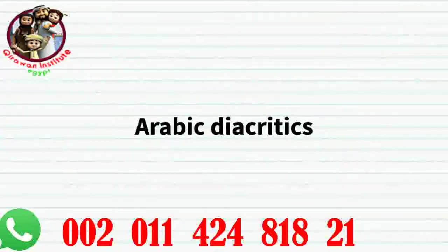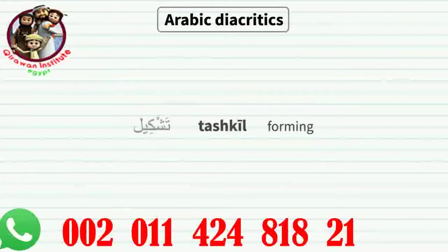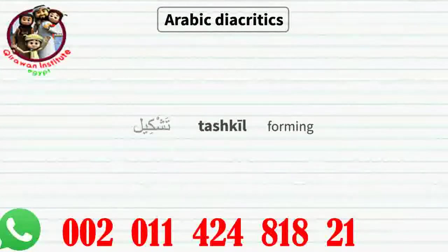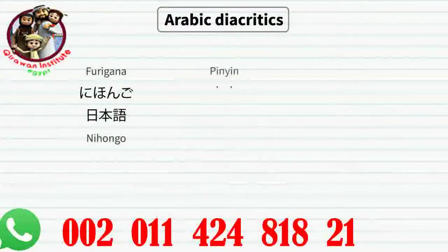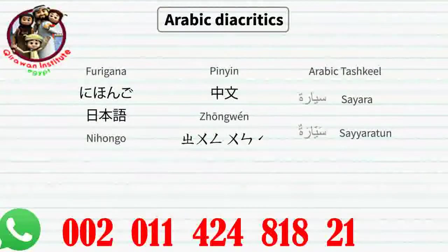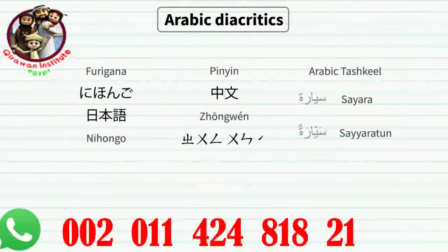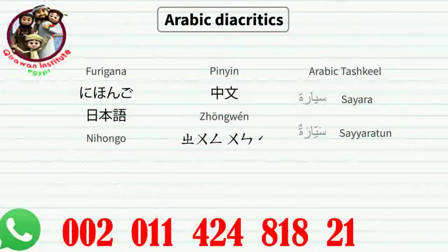Arabic diacritics — tashkil. As a normal Arabic text does not provide enough information about the correct pronunciation, the main purpose of tashkil is to provide a phonetic guide. It serves the same purpose as furigana in Japanese or pinyin in Mandarin Chinese, for children who are learning to read or foreign learners. Some Arabic textbooks for foreigners use harakat as a phonetic guide. Just remember that diacritics cannot be used without a letter — they must come with a letter.